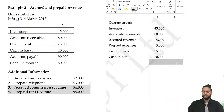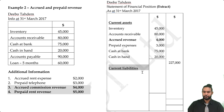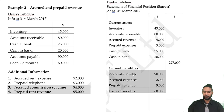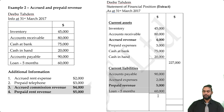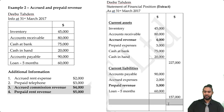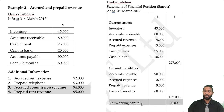After getting the current asset subtotal, we move to current liabilities: accounts payable, loan for five months, accrued expenses, and prepaid revenue. There's no particular required order for current liabilities. We take the $227,000 total current assets, subtract total current liabilities, and get net working capital. You may not have to show net working capital in every balance sheet — pay attention to your instructions, and if no specific format is given, you're free to present it how you choose.